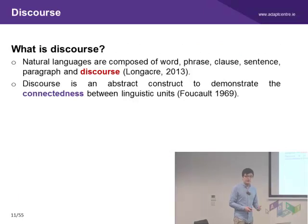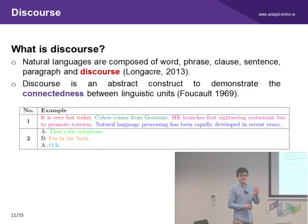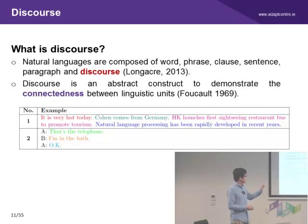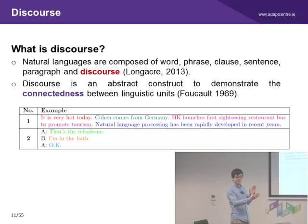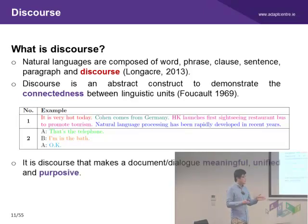After introducing machine translation, I will talk about discourse. What is discourse? We can see it as a functional unit of language that controls connectives. In example one, four sentences are all grammatically correct and put together in one paragraph, but it is not discourse because each sentence is independent with no relation to the others. By contrast, the dialogue in example two is a discourse. Although some information is implicit, we can still understand the whole story — A asked B to help answer the phone, but B could not. We think discourse makes a document or dialogue more meaningful, unified, and purposive.